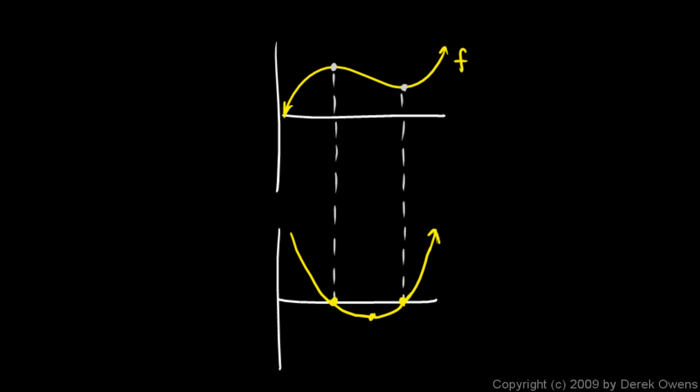And if my original function here f is a cubic, then I end up with a parabola. But the point is that we can look at the slope of this curve at any point and produce the value of this curve, and that's taking the derivative of the original function.